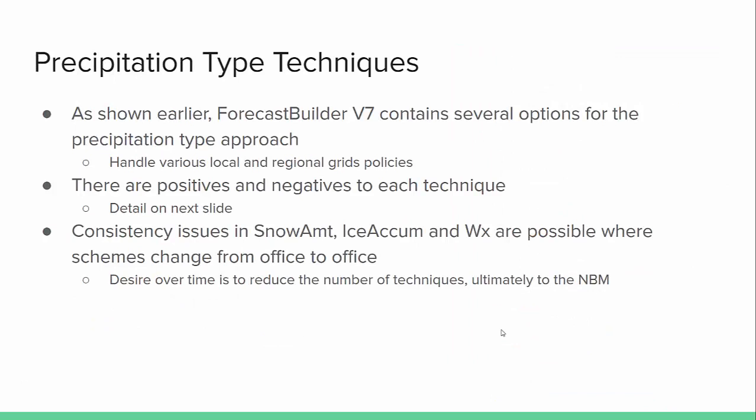Finally, let's talk about precipitation type. As you've seen through this presentation, version 7 contains several options for the P-type approach, really just to handle the various local and regional grid policies — and handling all these policies creates a whole lot of code for version 7. There are positives and negatives to each technique, which we'll detail on the next slide. If you have a group of offices doing one technique and another group doing another technique, it's possible to see consistency issues with snow amount, ice accumulation, and weather. Over time, the hope is to reduce the number of techniques and ultimately get to the MBM as the primary technique, but that will take some time as we see how MBM is performing with P-type.